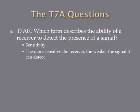The first question: which term describes the ability of a receiver to detect the presence of a signal? The answer is sensitivity. The more sensitive a receiver is, the weaker the signal it can detect. So sensitivity is a pretty good quality in a receiver.